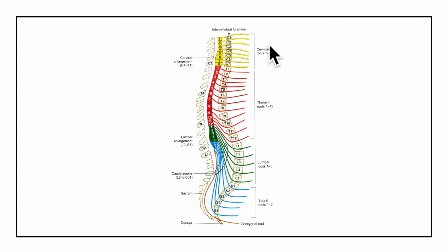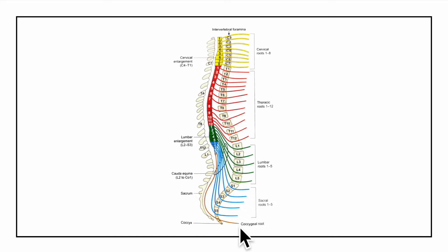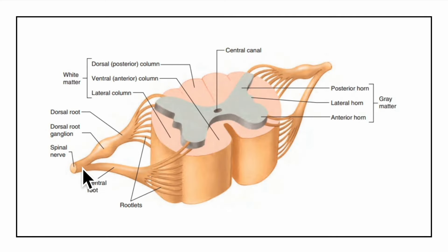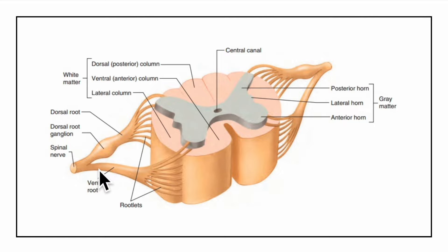Spinal nerves arise in pairs. There are 31 pairs of spinal nerves: 8 cervical, 12 thoracic, 5 lumbar, 5 sacral, and 1 coccygeal. Each spinal nerve arises by a series of 6 to 8 dorsal and ventral nerve rootlets, and these rootlets unite in or near the intervertebral foramen to form the spinal nerve.